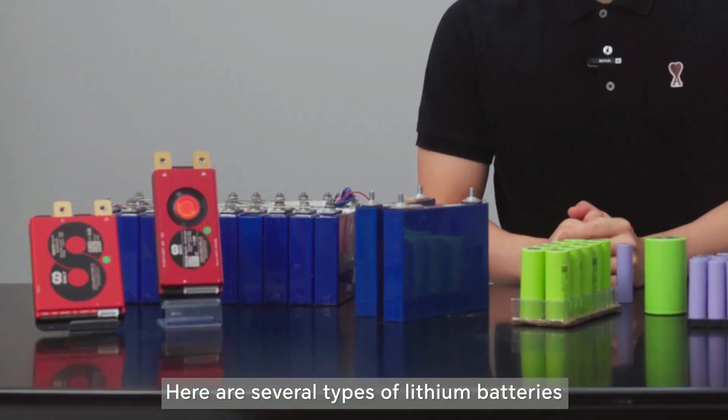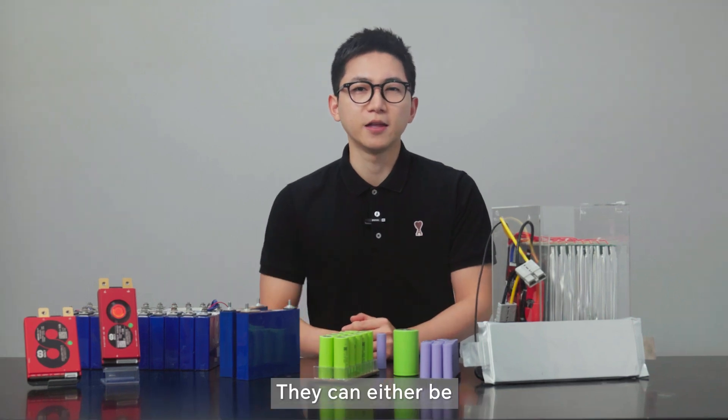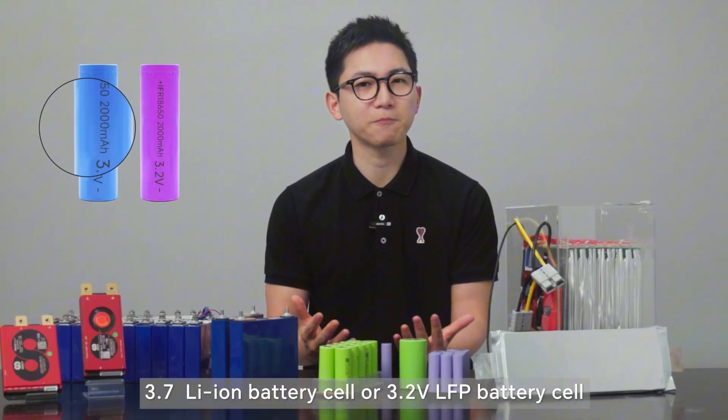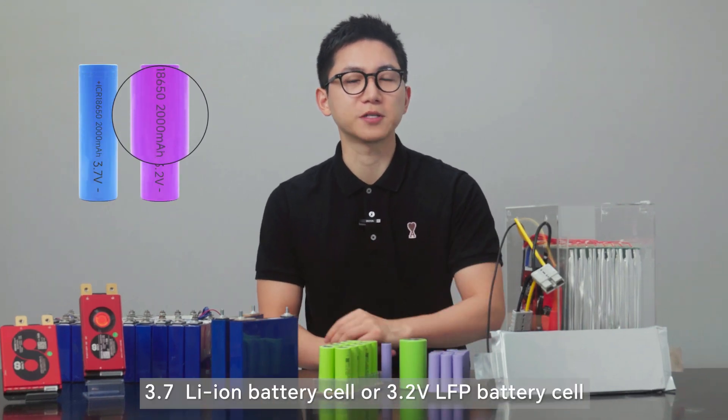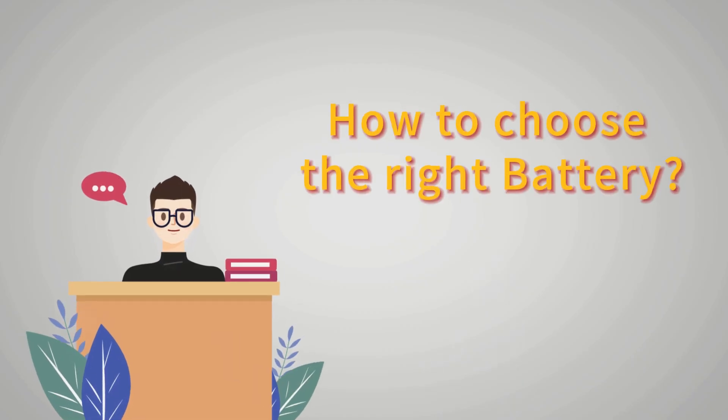Here are several types of lithium batteries: cylindrical, the square aluminum shell, and soft pack. They can either be 3.7V Li-ion battery cells or 3.2V LiFePO4 battery cells. So my question is, do you know how to choose them when you need to make a group of lithium battery?